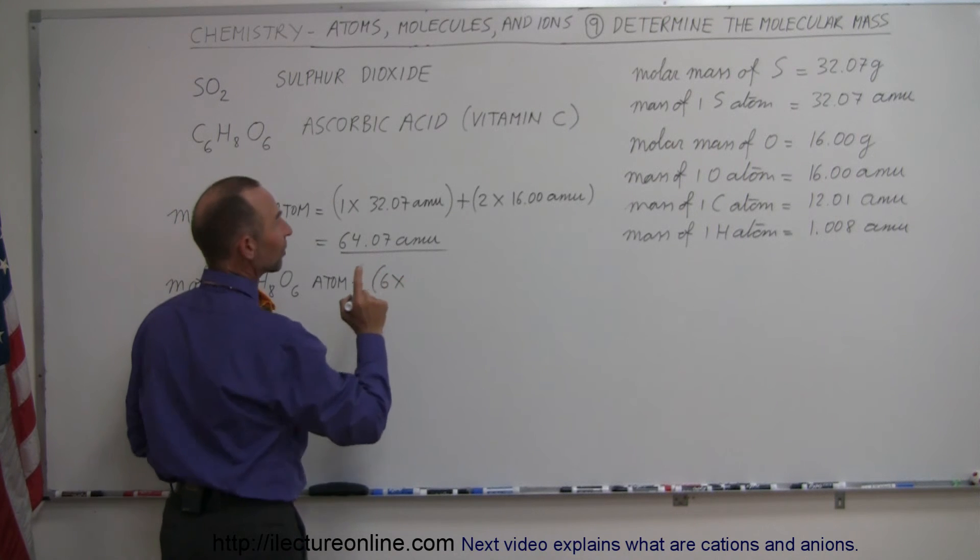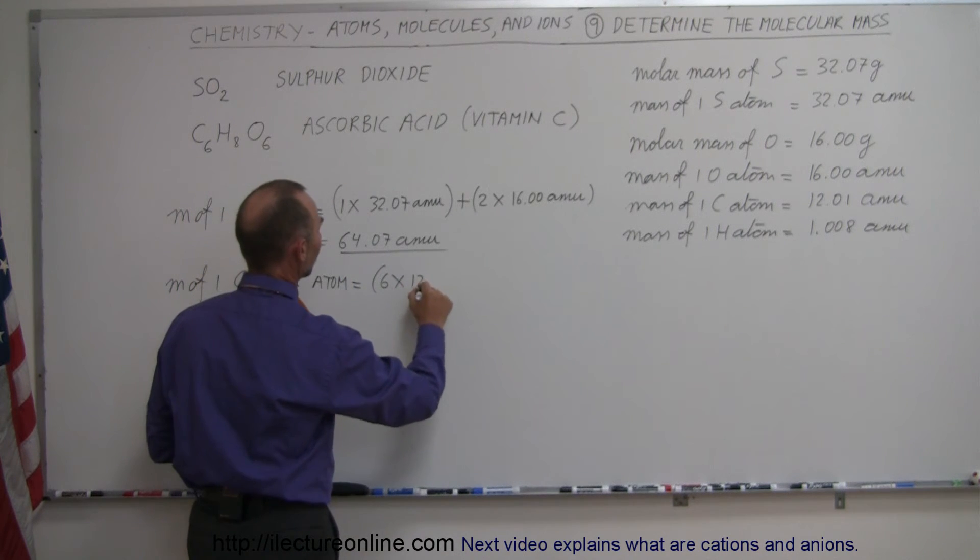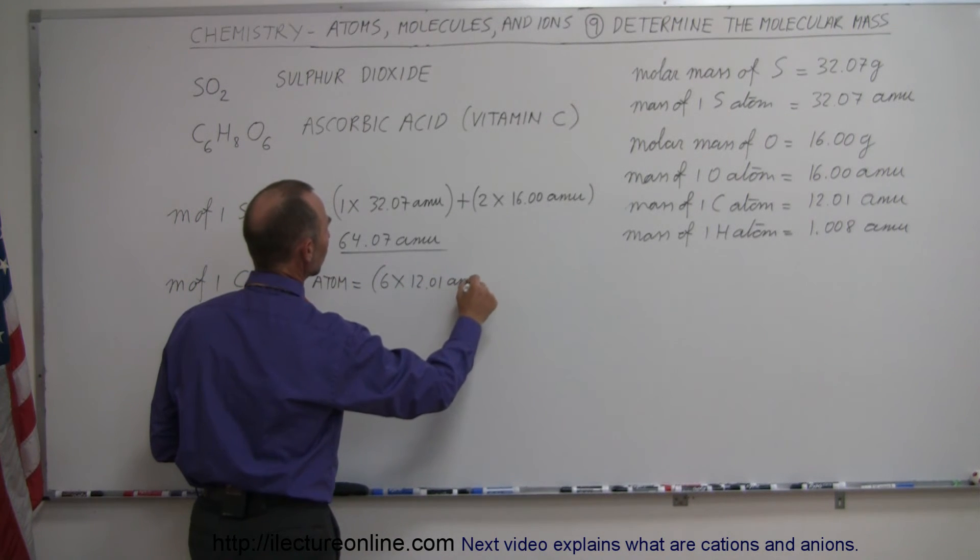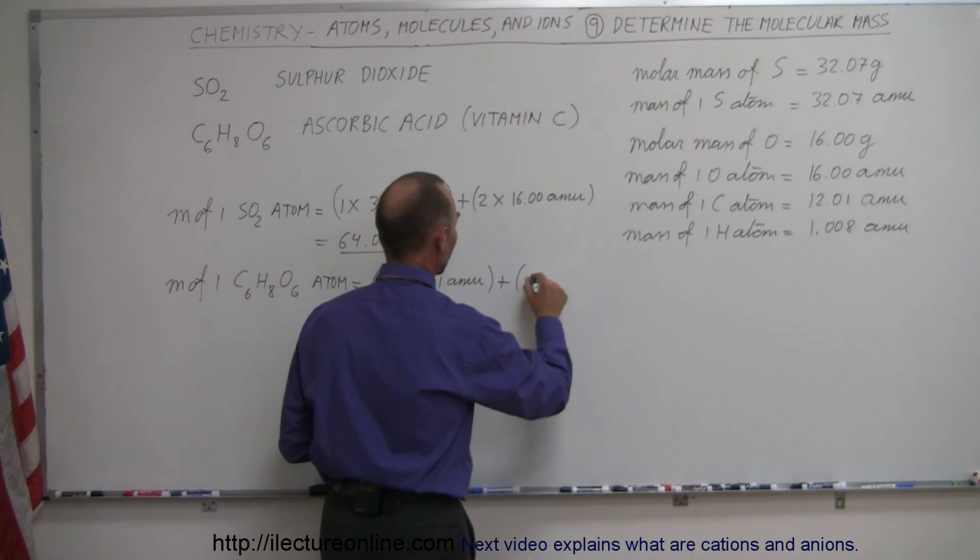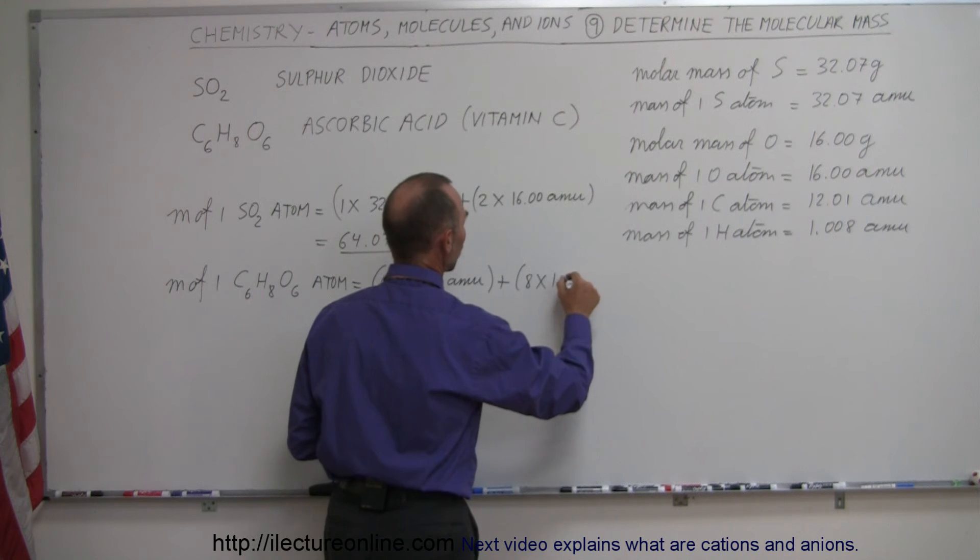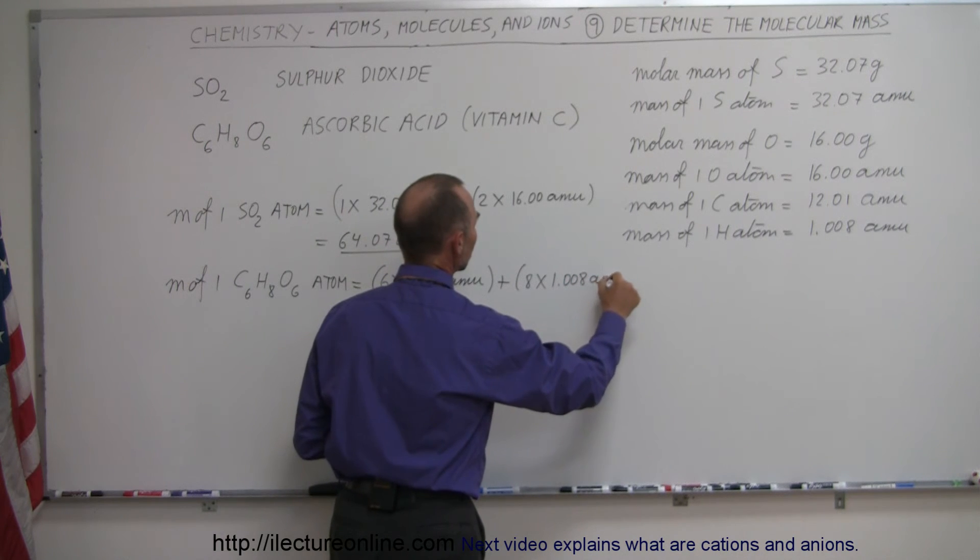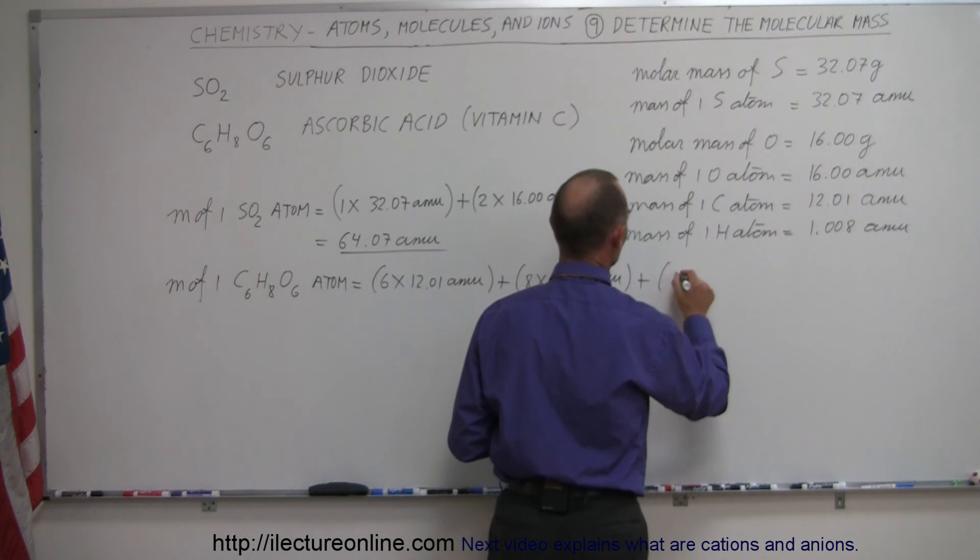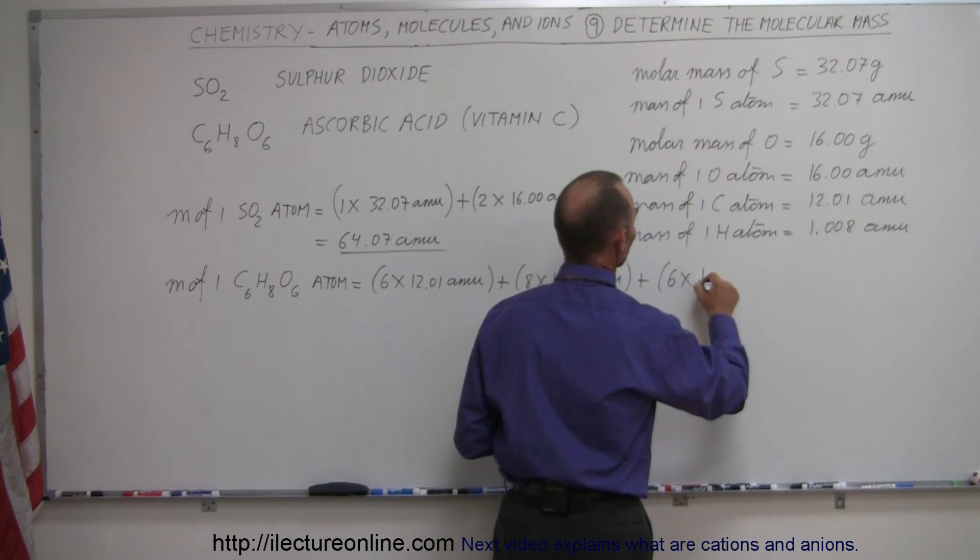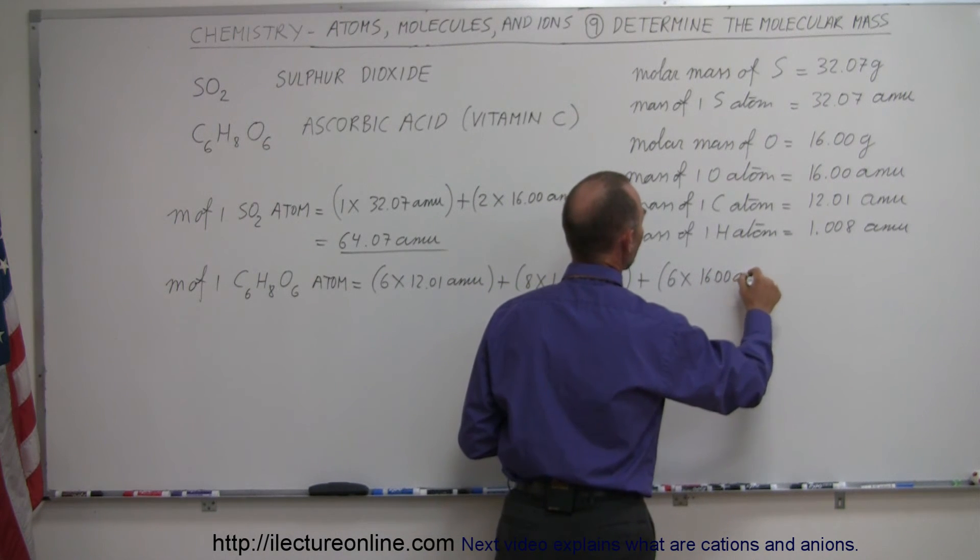so this would be 6 times the mass of a single carbon atom, which is 12.01 AMUs, plus we have 8 hydrogen atoms, so it would be plus 8 times 1.008 AMUs, plus, and we have 6 oxygen atoms, so it would be 6 times 16.00 AMUs.